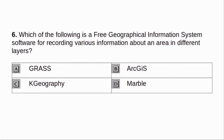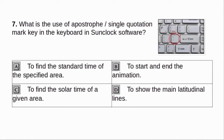Which of the following is a free geographical information system software for recording various information about an area in different layers? A. Grass. B. ArcGIS. C. K. Geography. D. Marble. Answer: A. Grass.